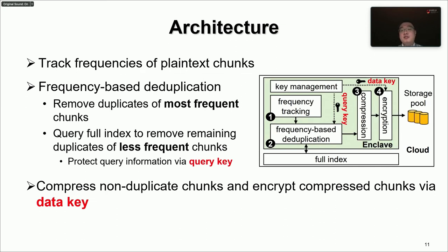Here we present the architecture of the enclave. The enclave tracks the frequencies of plaintext chunks to identify the most frequent and less frequent chunks for frequency-based deduplication. The first phase removes duplicates of the most frequent chunks inside the enclave, then interacts with the full index to remove remaining duplicated data of less frequent chunks via ocalls. A query key is used to protect the interaction between the full index and the enclave. After deduplication, the enclave compresses non-duplicate chunks and encrypts the compressed chunks via a long-term data key for storage.